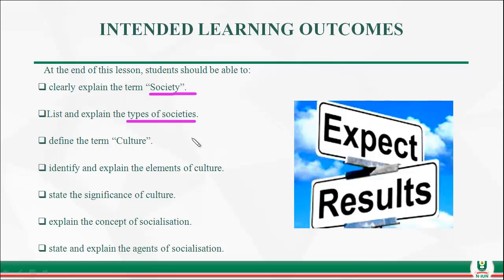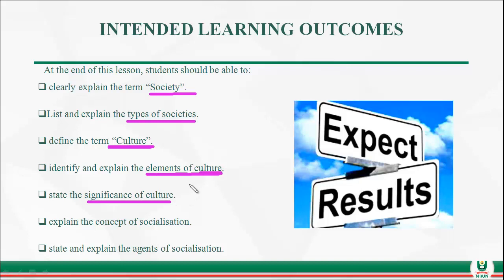The second aspect of this lesson is culture. By the end of this lesson, you should be able to define the term culture — not the social studies type of definition, but a more advanced definition. You should also be able to identify and explain the elements of culture, state the significance of culture, explain the concept of socialization, and explain the agents of socialization.